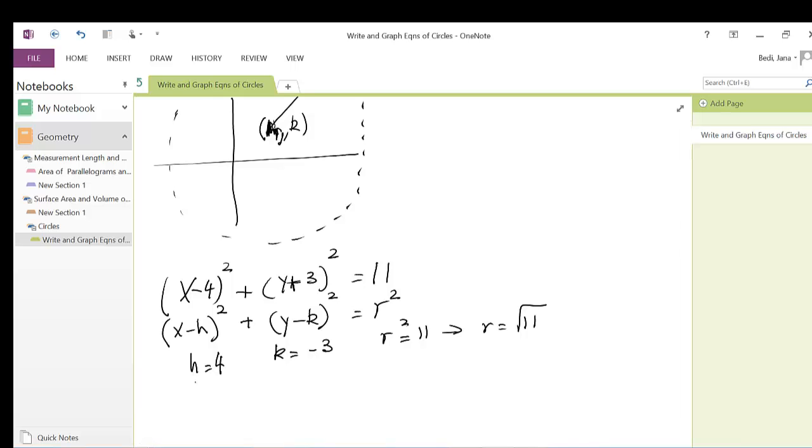So we would say that this is the equation of a circle. I'm going to write: circle with center (4, -3) and radius √11.